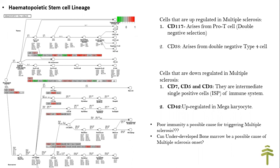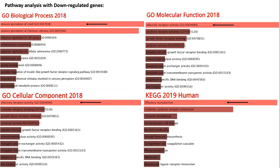Interleukin-3 is highly downregulated in the hematopoietic stem cell lineage pathway. Hence, a possible association could be made: can the underdevelopment or under-expression of interleukin-3 affect pro-T cell development, which in turn causes T cells to attack the myelin sheath? This is a research domain that needs more investigation in the future. The pathway analysis with downregulated genes shows that all the top hits were olfactory pathways and perception of smell, suggesting that MS patients have a loss of olfactory functions.